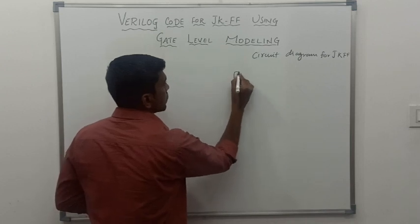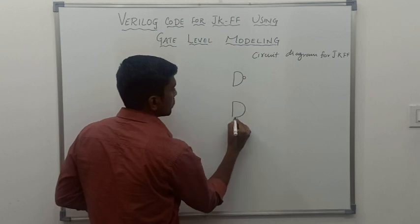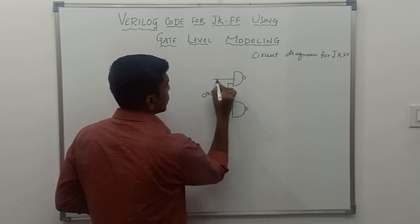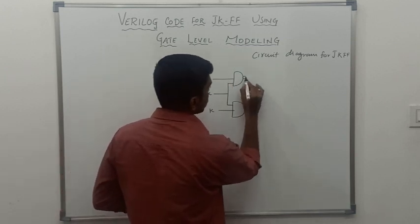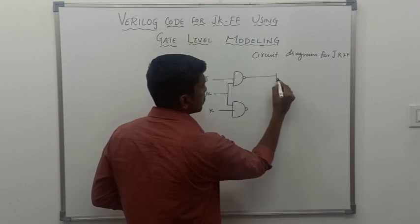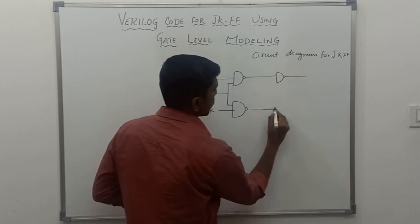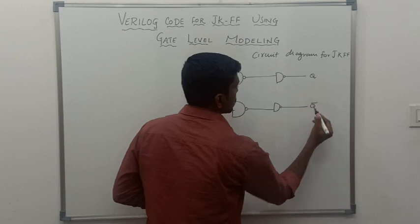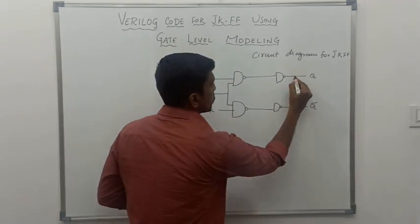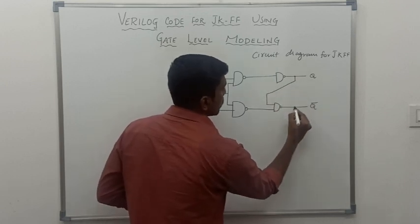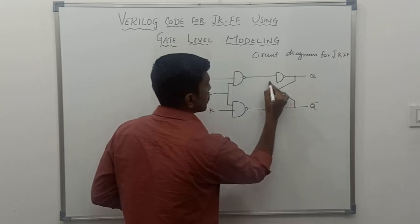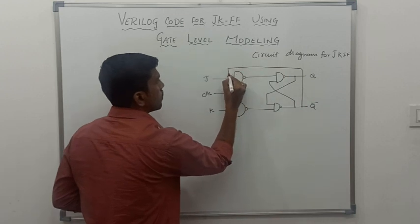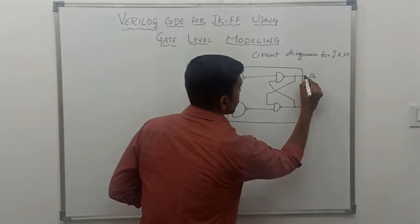In this circuit diagram we are using four NAND gates. This one is a clock input, this one is J, and this one is K. The output of the first NAND gate is connected to the third NAND gate. Output of the second NAND gate connects to the fourth NAND gate. Here output is Q, and this output is Q bar. This Q is connected to input of the fourth NAND gate, Q bar is connected to input of the third NAND gate, Q bar is also connected to input of the first NAND gate, and the second NAND gate input is Q.